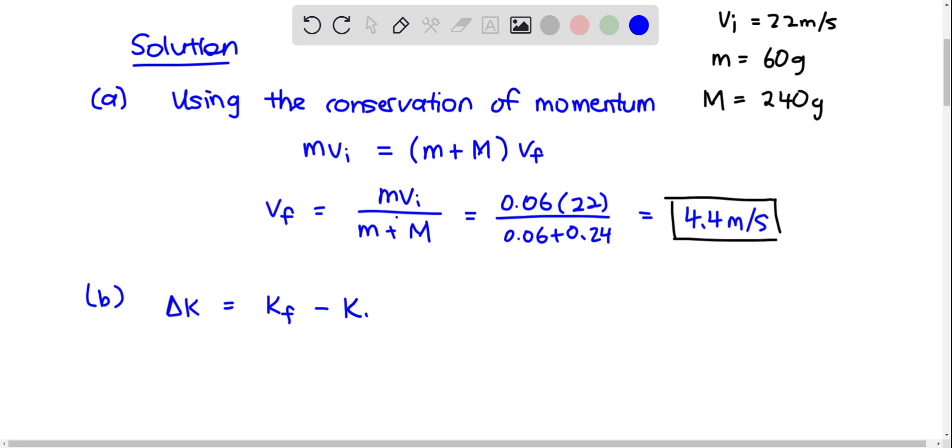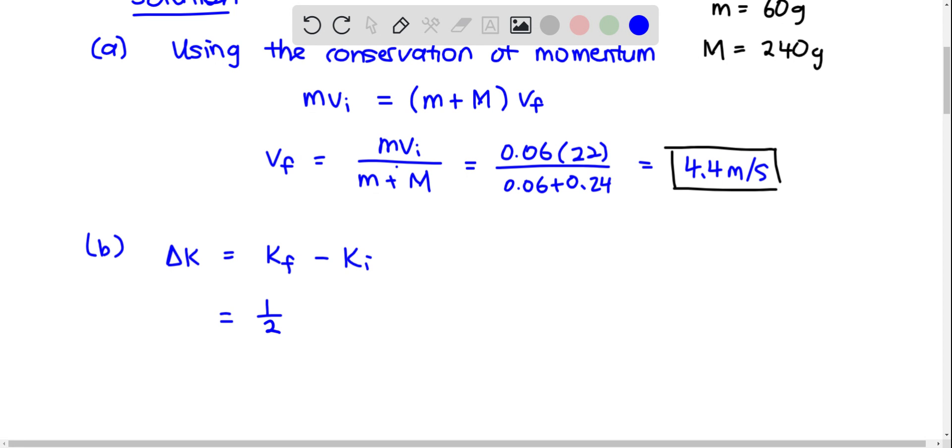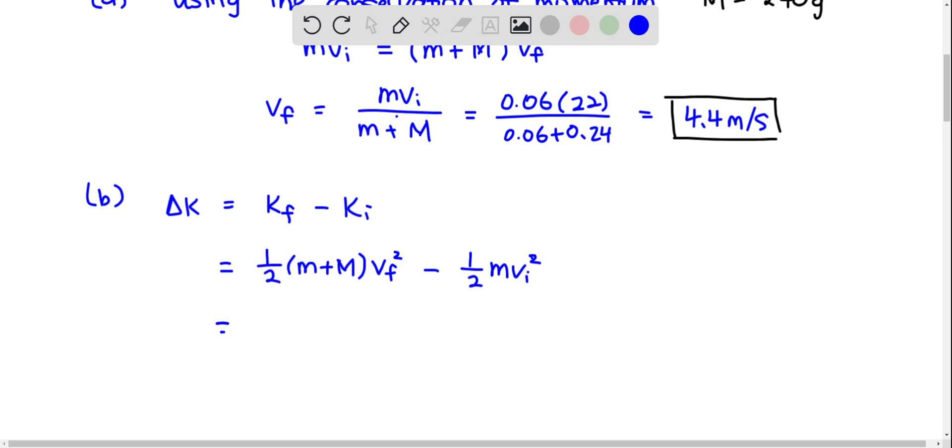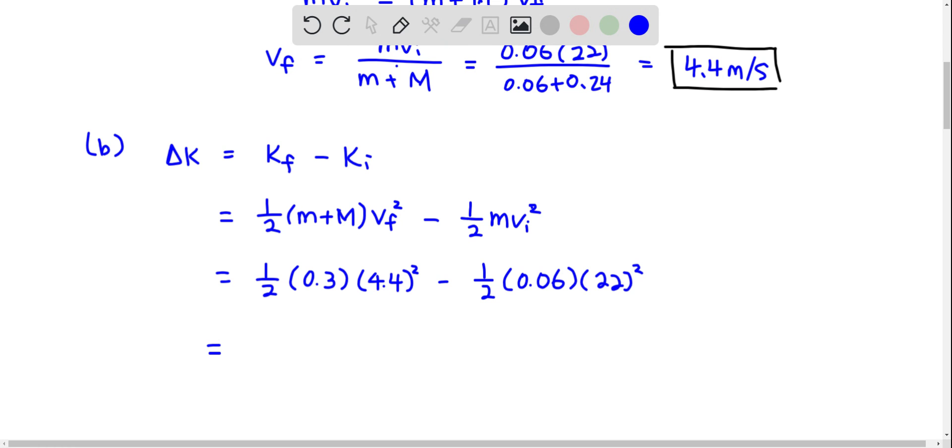Kf is half (m + M) vf squared minus the initial kinetic energy, which is the kinetic energy of the ball. So you have half times 0.3 times 4.4 squared minus half times 0.06 times 22 squared. You do this calculation and you get negative 11.616 joules.